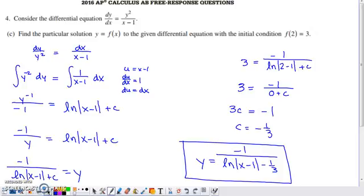In part C, they ask us to find the particular solution that was described back in part B. So the same initial condition that was described in part B, but now we actually want to determine what that solution curve is going to be. We're going to separate our variables in order to find this particular solution.